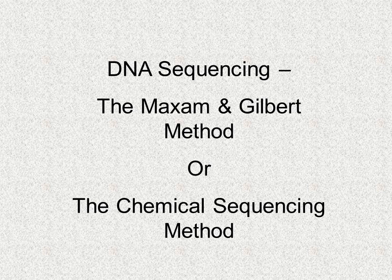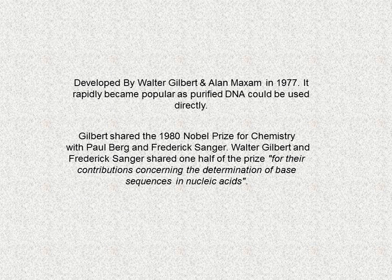The Maxam-Gilbert method, sometimes known as the chemical sequencing method, can be used in the task of DNA sequencing. The method was developed by Walter Gilbert and Alan Maxam in 1977. It rapidly became popular as purified DNA could be used directly.